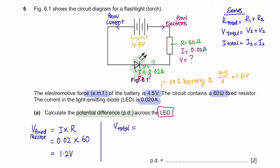And for series circuit, the total voltage in the circuit is equal to the voltage of all the components combined together. So the total voltage is 4.5V and we are looking to find the voltage of LED. And we already know the voltage of the fixed resistor is 1.2V. So that's going to give us 3.3V.